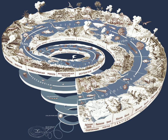A sequence of paleomagnetic poles, usually called virtual geomagnetic poles, which are already well defined in age, constitutes an apparent polar wander path (APWP). Such a path is constructed for a large continental block. APWPs for different continents can be used as a reference for newly obtained poles for rocks with unknown age. For paleomagnetic dating, it is suggested to use the APWP in order to date a pole obtained from rocks or sediments of unknown age by linking the paleopole to the nearest point on the APWP.